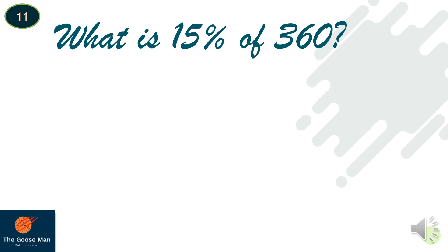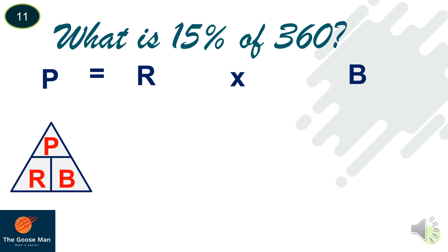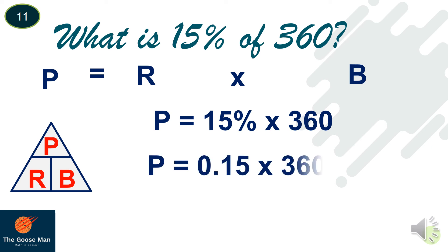Let's have another example: What is 15% of 360? Setting up the equation: P equals 15% times 360. Since we are looking for the percentage, using the triangle, percentage equals rate times base. Substituting the values: 15% is 0.15 in decimal, times 360. The percentage is equal to 54.